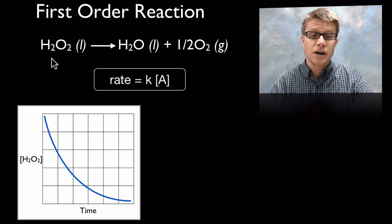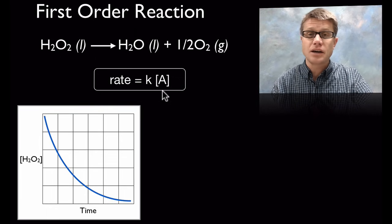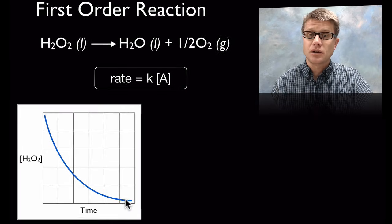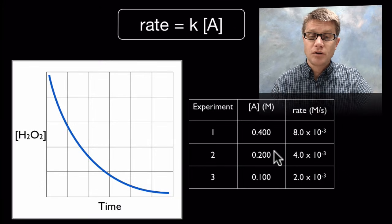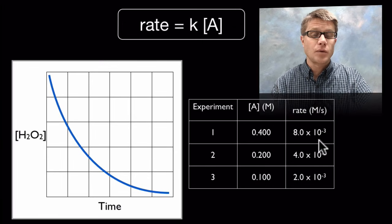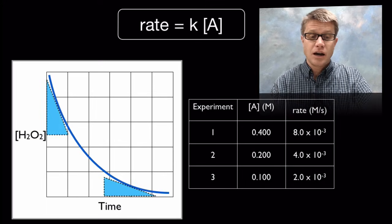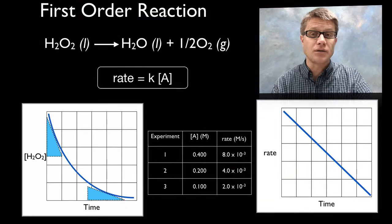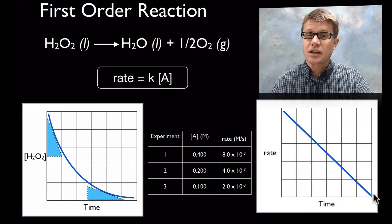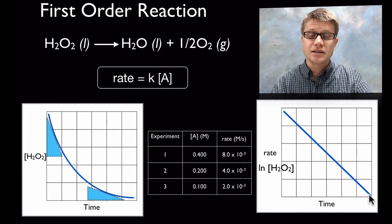For a first order reaction, an example is the breakdown of hydrogen peroxide. Rate equals k times [A]. If we run experiments with varying concentration of A, we find a direct relationship: doubling the concentration doubles the rate. A great example of first order kinetics is radioactive decay. If we calculate the slope, it's steep at the beginning and less steep over time. Graphing rate over time gives a descending straight line, and taking the natural log of concentration versus time also yields a straight line whose slope equals k.